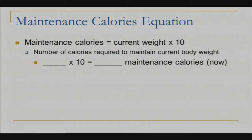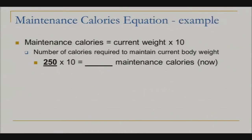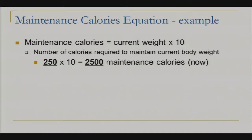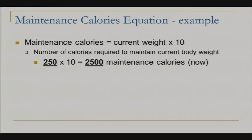You don't need a calculator — just add a zero on the end of your weight. So if you are 250 pounds, multiply that by 10, and 2500 calories would be your maintenance calories. The maintenance calories is the number of calories required for you to maintain your current body weight — that's how many calories you would need to take in to stay at the weight you're at right now.